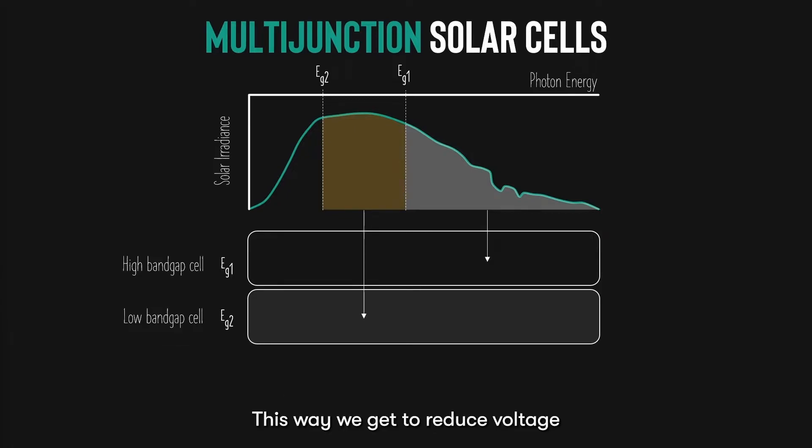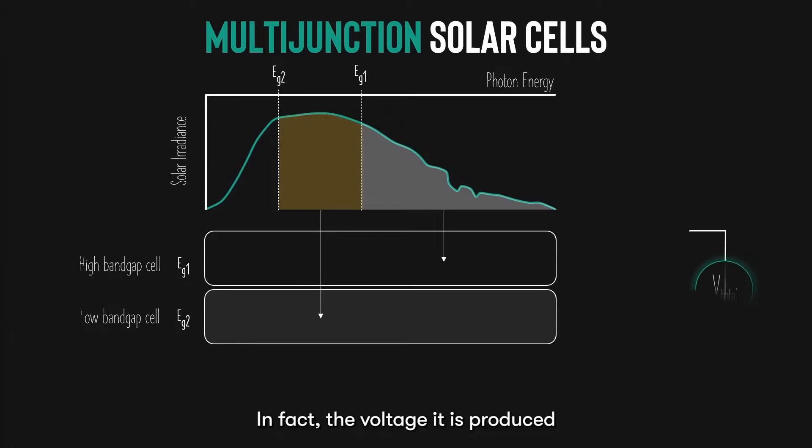This way, we get to reduce voltage loss caused by thermalization of electrons. In fact, the voltage that is produced by the solar cell is the addition of both the voltages of the top and bottom layer, since they are connected in series.